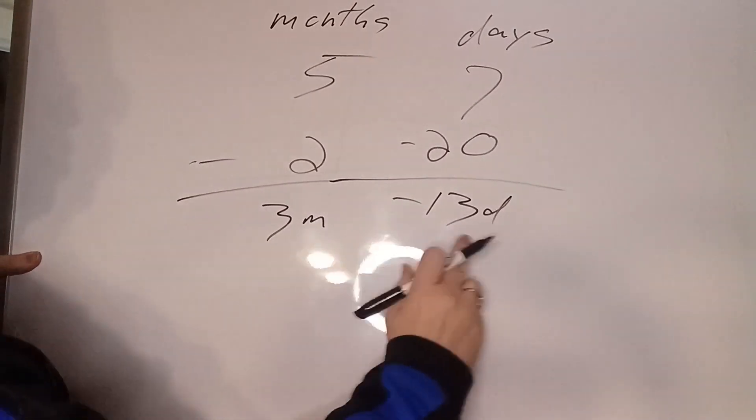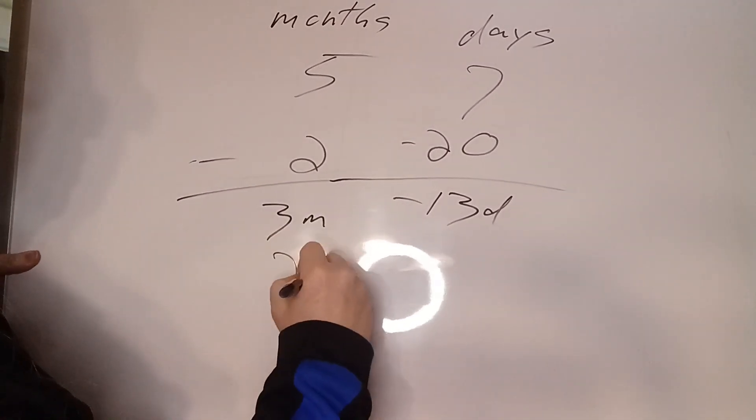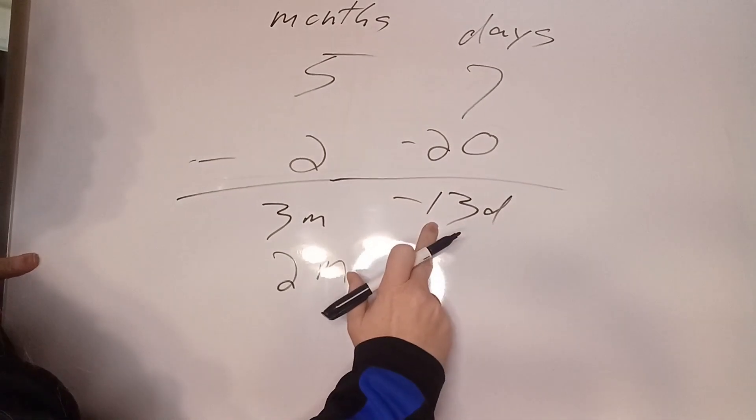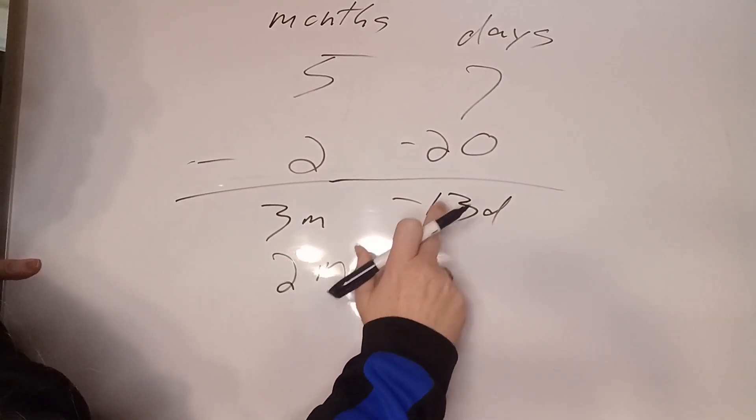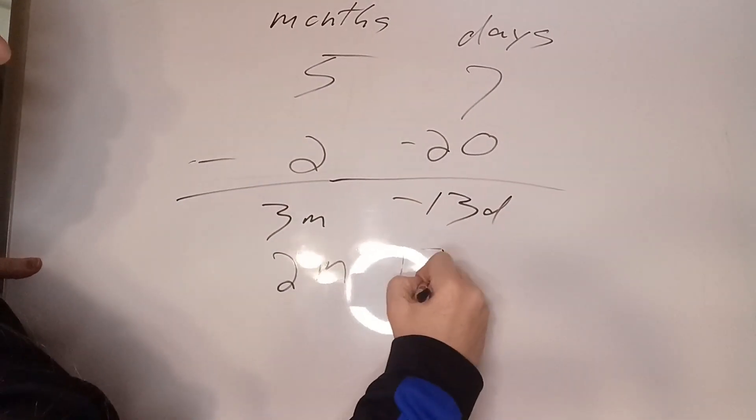And now we take this apart. Two months and 30 minus 13 is 20, 17, 17 days.